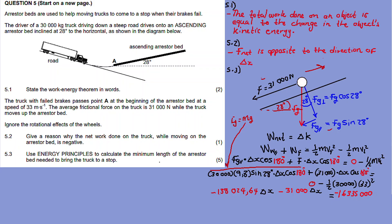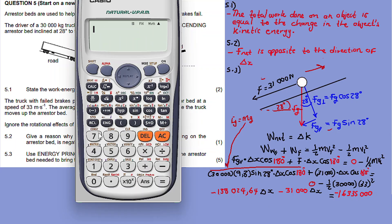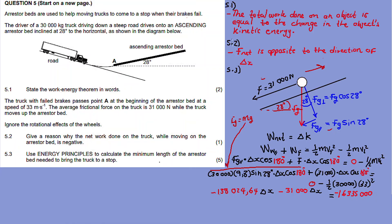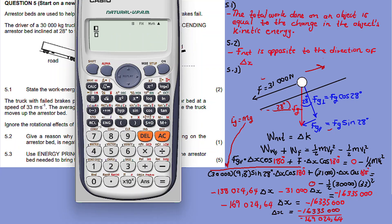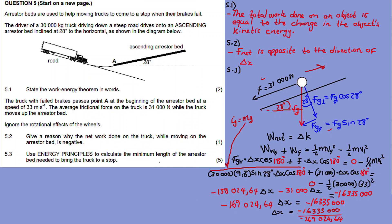On the left-hand side, combining both terms we get a coefficient for delta x. Delta x equals negative 16,335,000 divided by the combined negative coefficient — giving a final answer of approximately 96.64 meters. This is the minimum length of the arrestor bed needed to bring the truck to a stop.